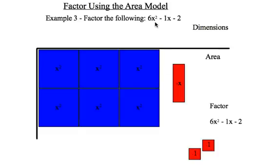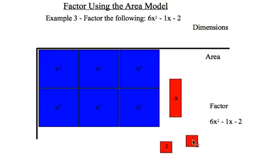Third example: 6x² - x - 2. So right away we can see there is absolutely no way I can make a rectangle out of these little pieces.